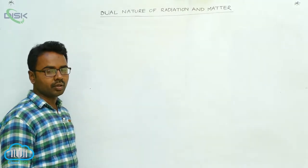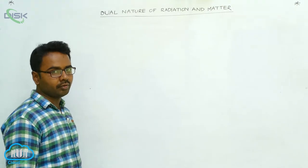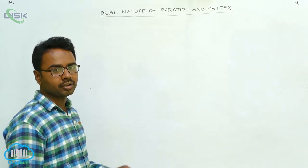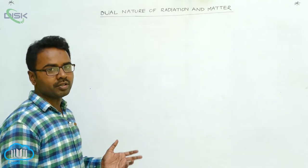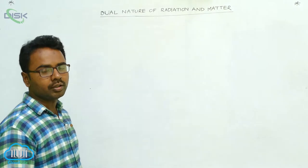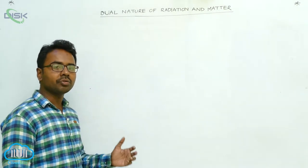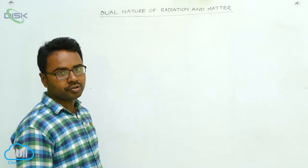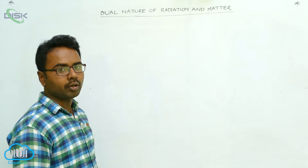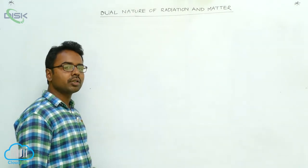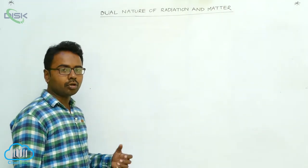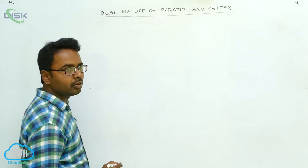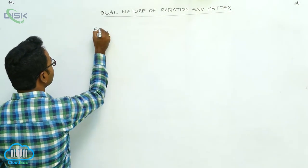Dual nature of radiation and matter means radiation and matter having both wave nature and particle nature. In our previous lessons we had seen that electromagnetic radiation, i.e. light, has wave nature. In this lesson we are going to see how light exhibits particle nature, in which phenomenon it exhibits particle nature, and also how matter has dual nature — both wave nature and particle nature.